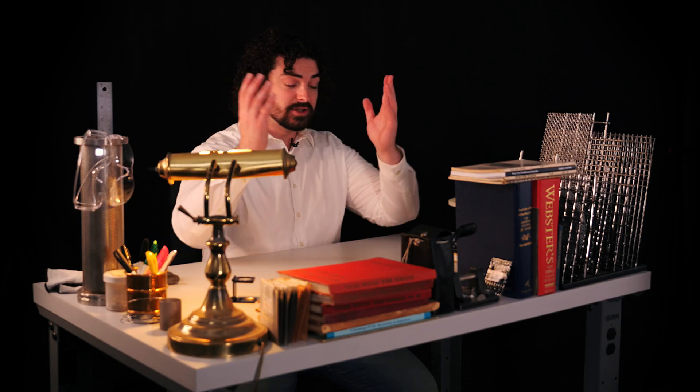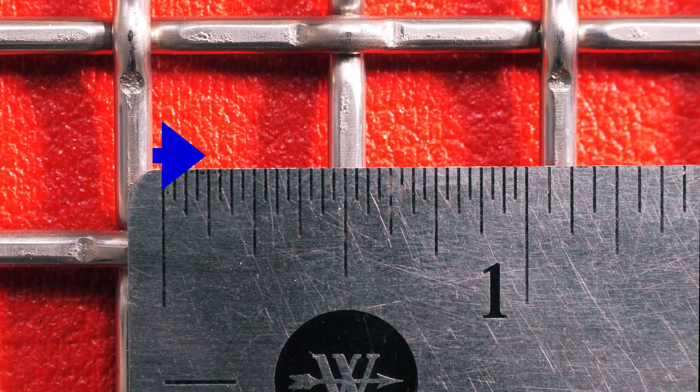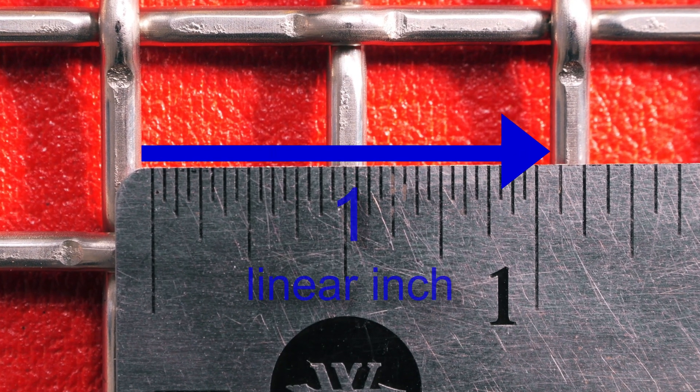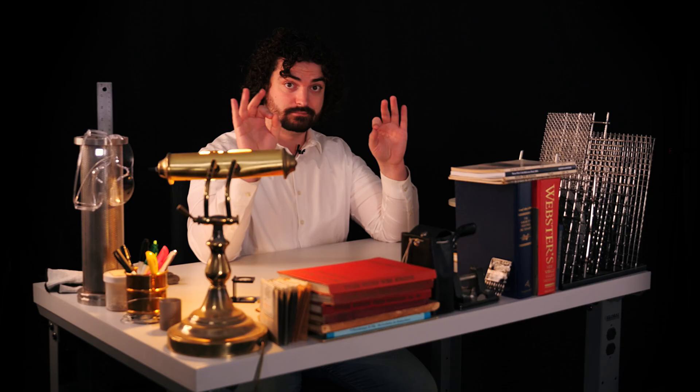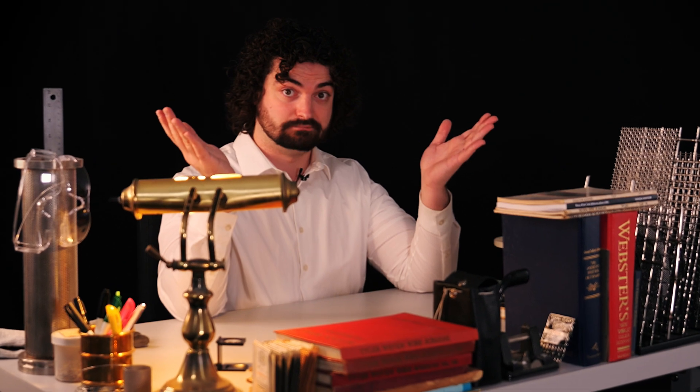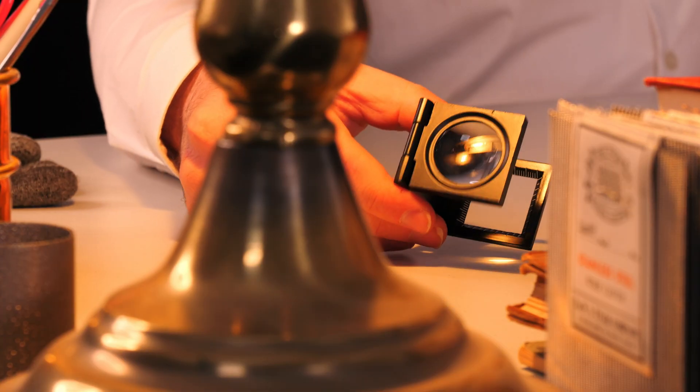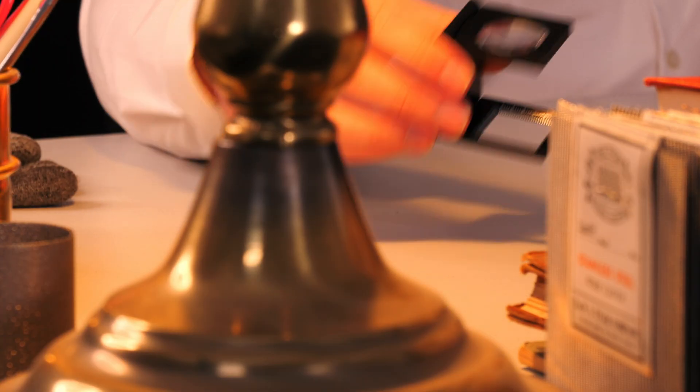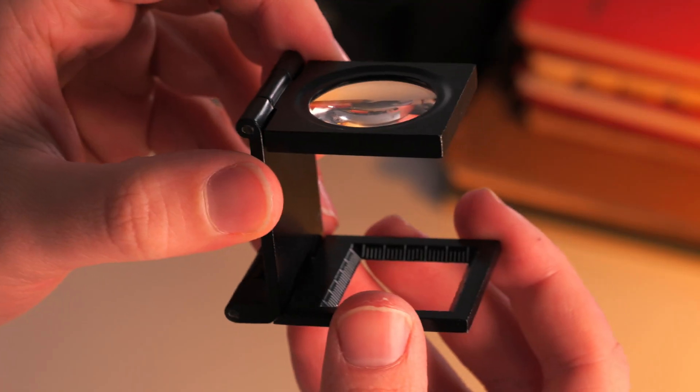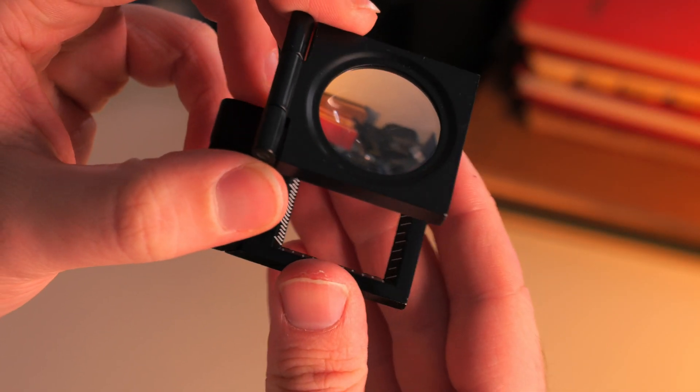Okay, so mesh count is pretty simple, actually. Mesh count is how many openings are in a linear inch. That's it. So in the fabric weaving industry, this little guy is sometimes called a linen counter, or a magnifying thread counter, or just a loop.